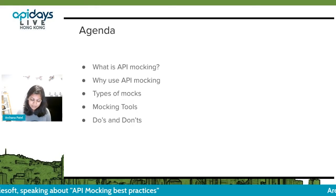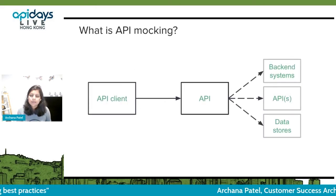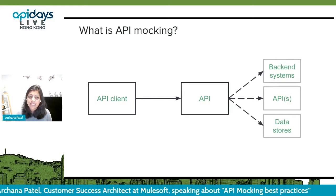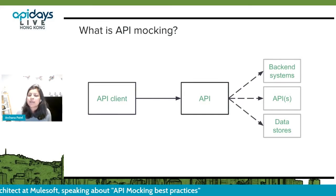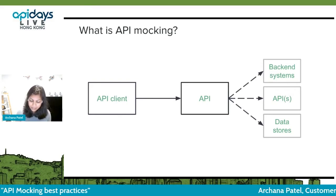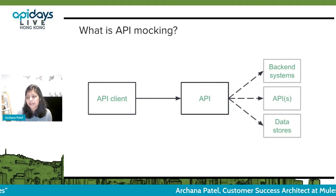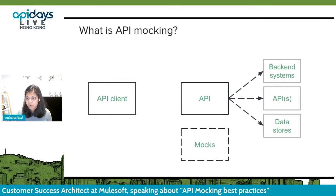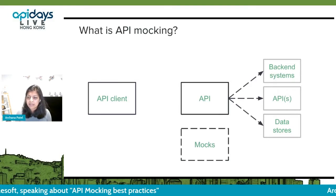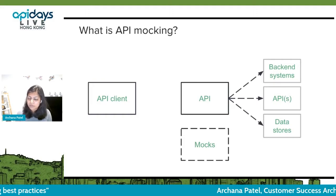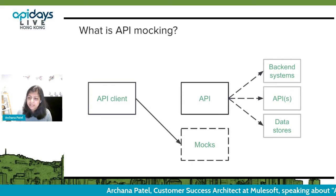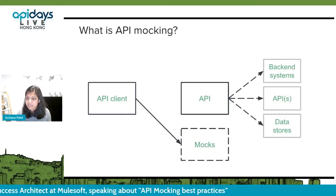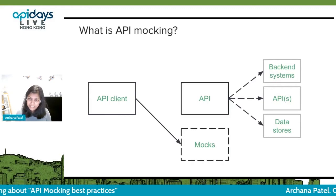So what is API mocking? In a simple scenario, you have an API that is talking to backend systems or different data sources, and an API client sends a request and receives a response. Now if that API is not available or not reliable, instead of calling it directly, you can redirect the API client to use mocks — predefined sample responses that mimic what the API would have returned. There are also related concepts like API virtualization and stubbing, but we'll focus on simple mocking.